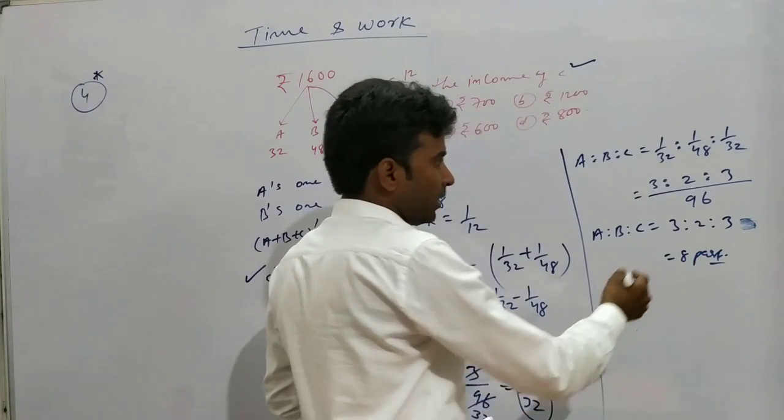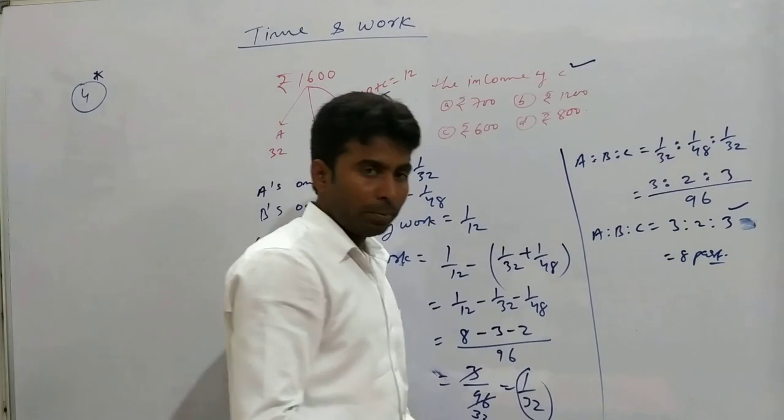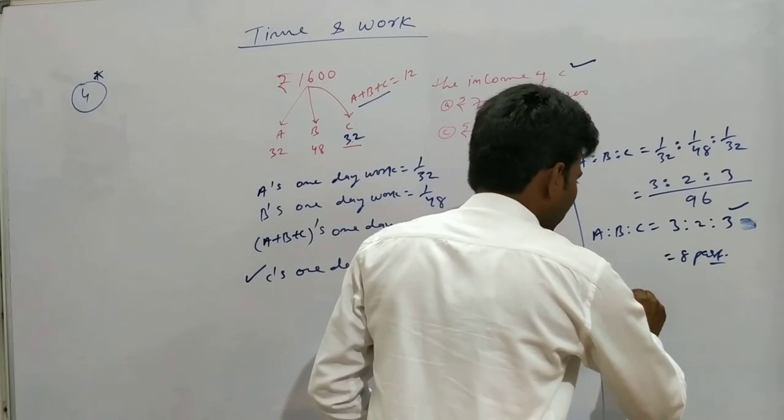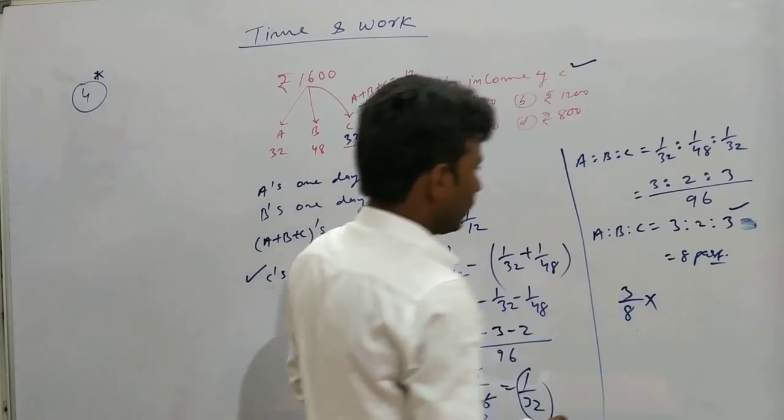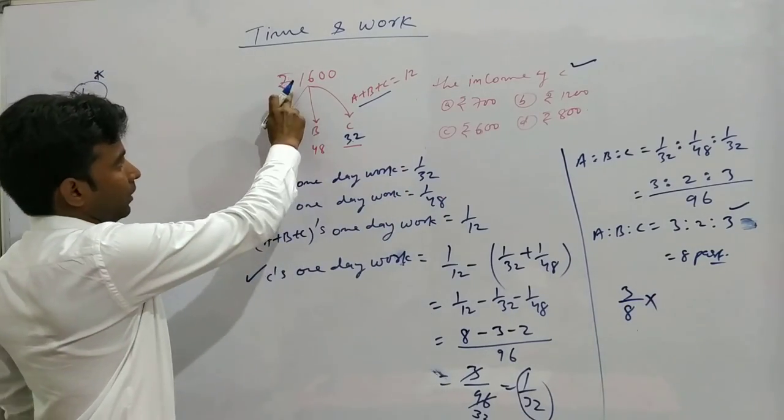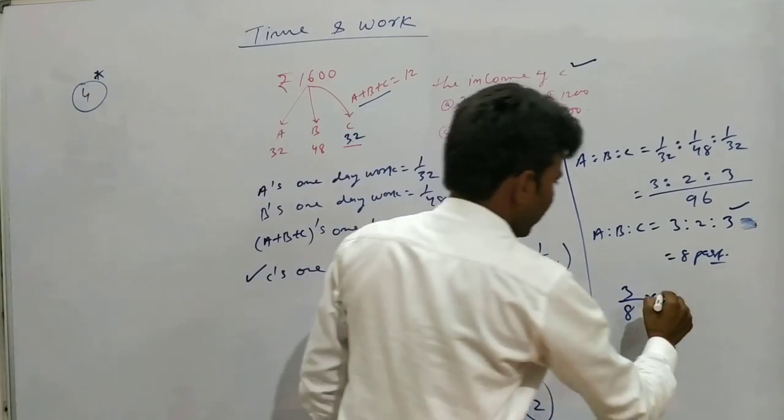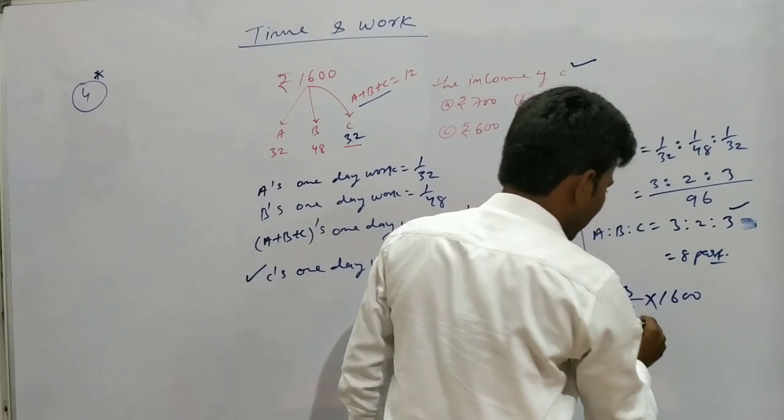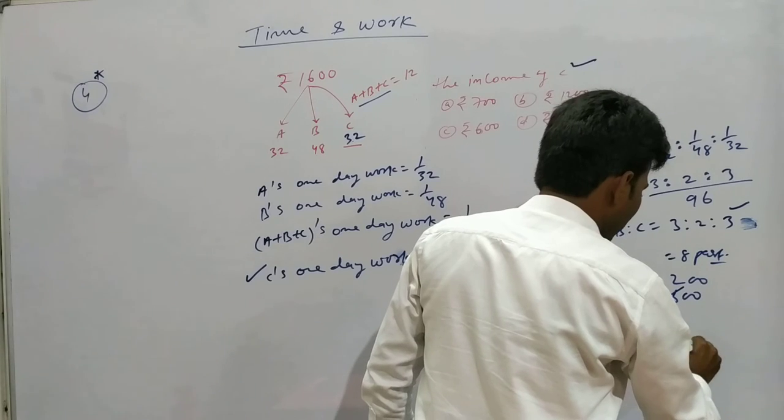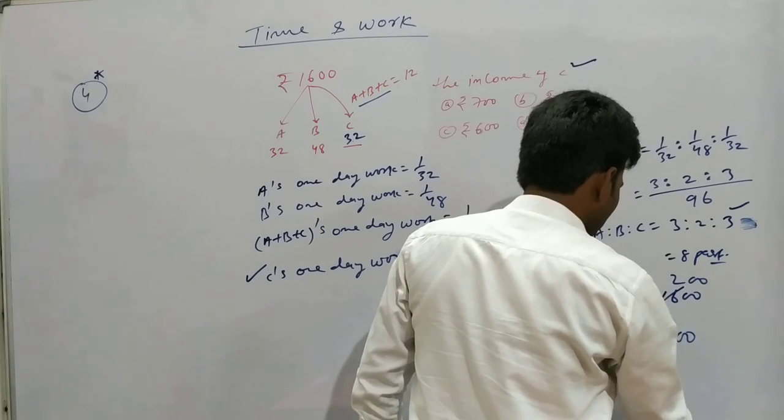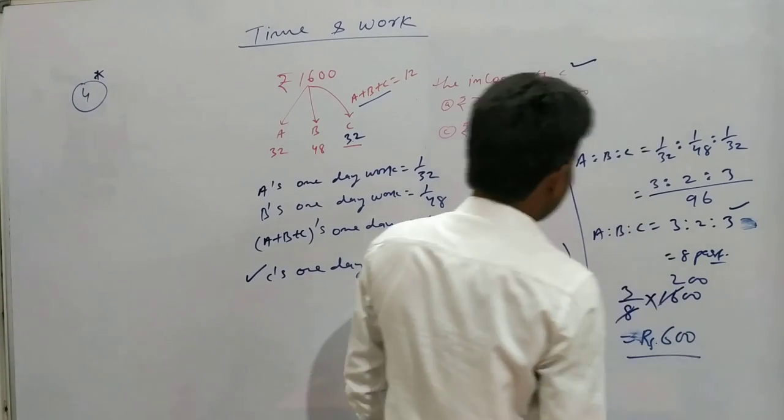Now C has 3 parts out of 8 total. So 3 upon 8 into total rupees 1600. 8 goes into 16 twice, 3 into 2 is 6, giving us rupees 600.